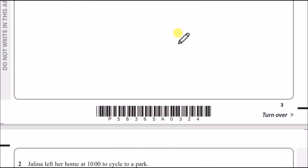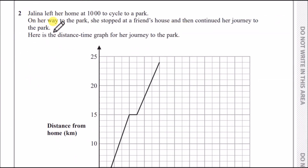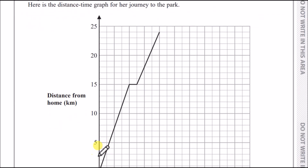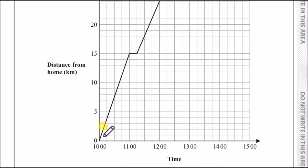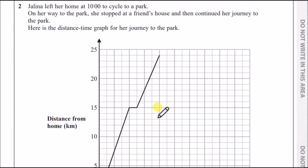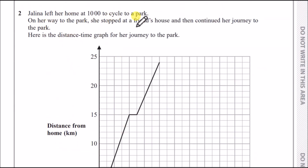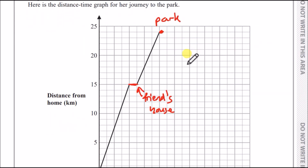Number two: Jelena left her home at 10 a.m. to cycle to a park. On the way she stopped at a friend's house, then continued to the park. On the distance-time graph, home is at the bottom. Where she isn't moving, that's her friend's house. The park is at the top. Here is the distance-time graph for her journey to the park.